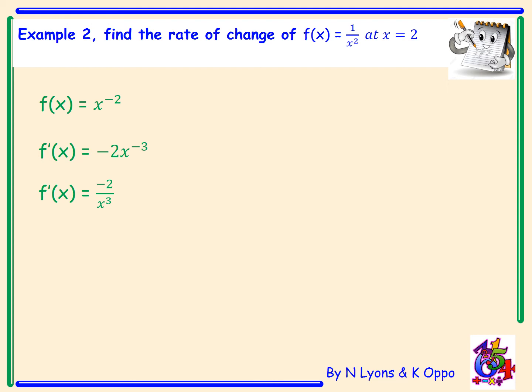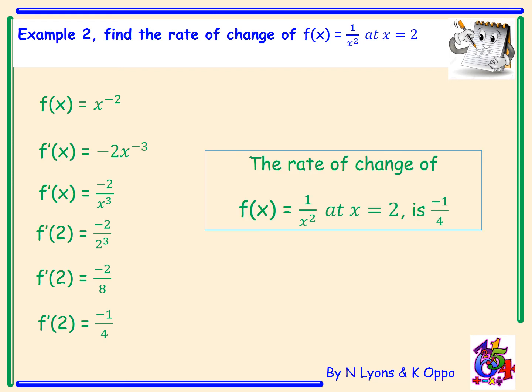Now we need to find the rate of change at x = 2. Once we've differentiated and removed any negative powers, we insert the value x = 2 into the derivative. So −2 over 2³ becomes −2/8, which simplifies to −1/4. So the rate of change of f(x) = 1/x² at x = 2 is −1/4.